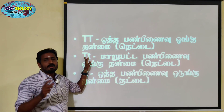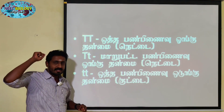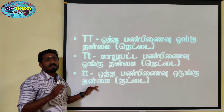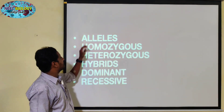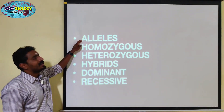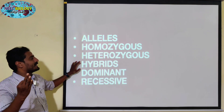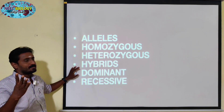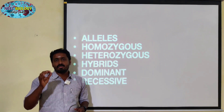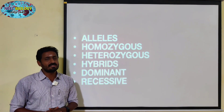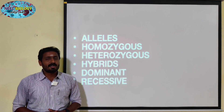Capital T will be dominant. Small t small t is the recessive condition. In this video, we talked about homozygous, heterozygous, hybrids, dominant, and recessive. Please subscribe to the Tamil Nadu channel.